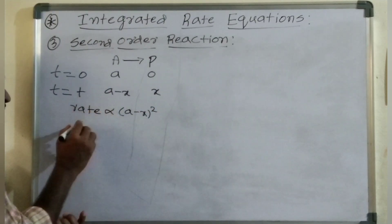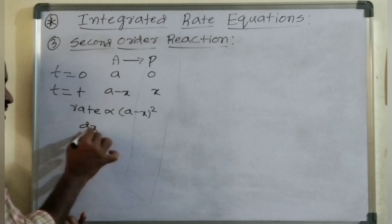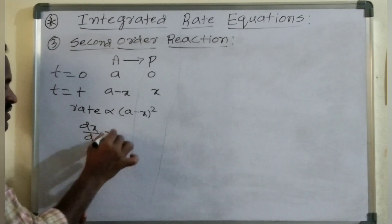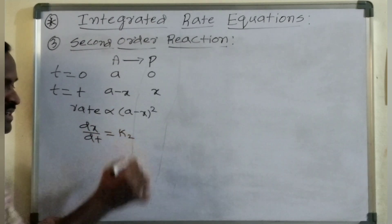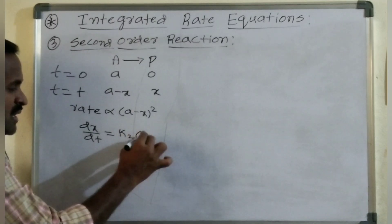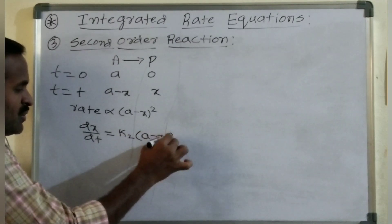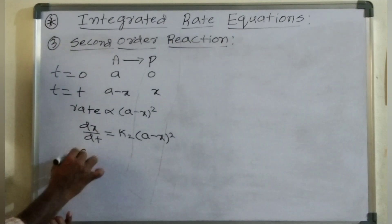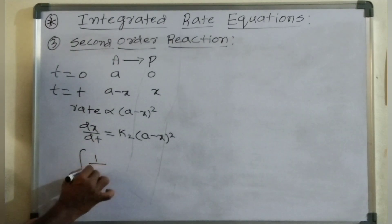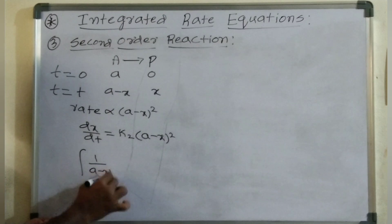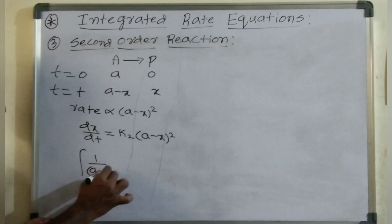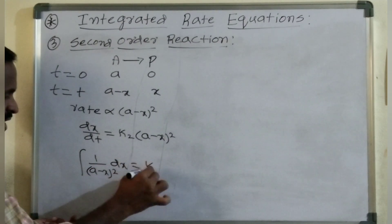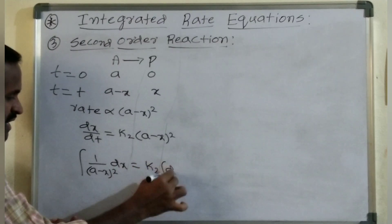Rate can be written as dX/dT, which equals the second order rate constant K2 into (A minus X) whole power 2. Taking integration on both sides, we get integration of (A minus X)^2 into dX equals K2 into integration of dT.